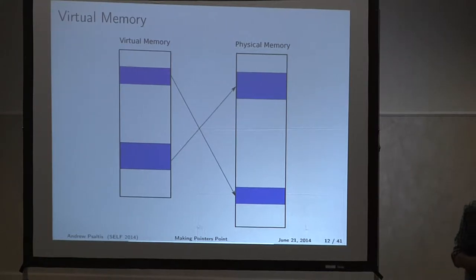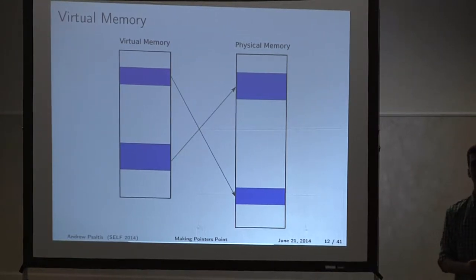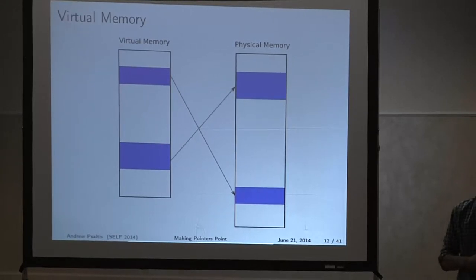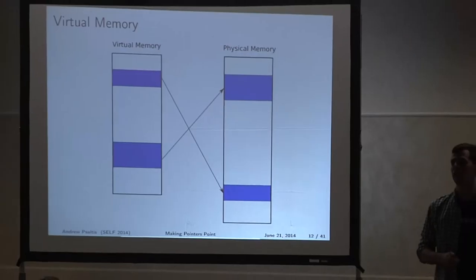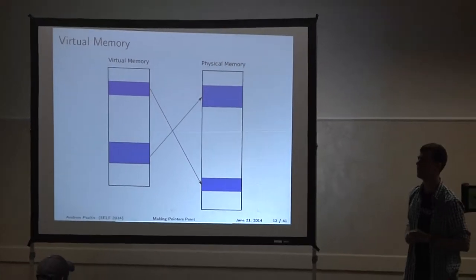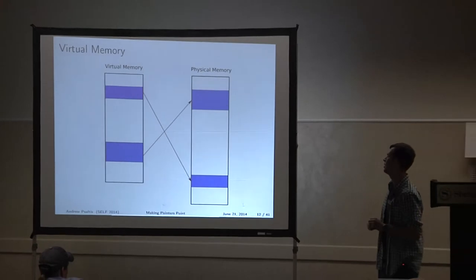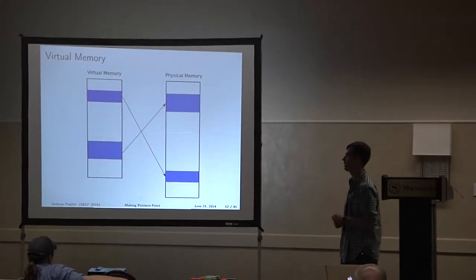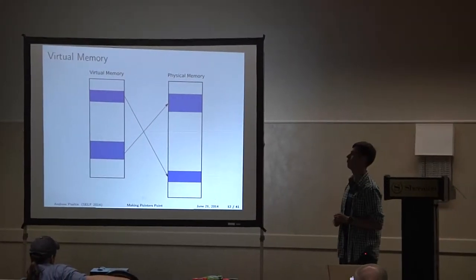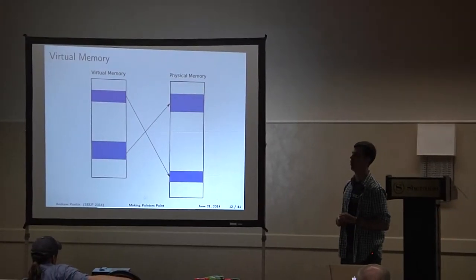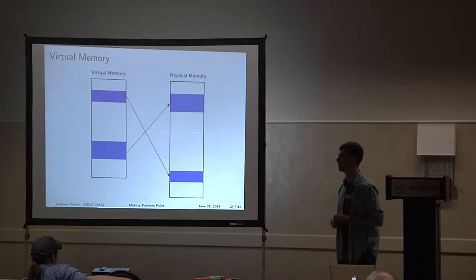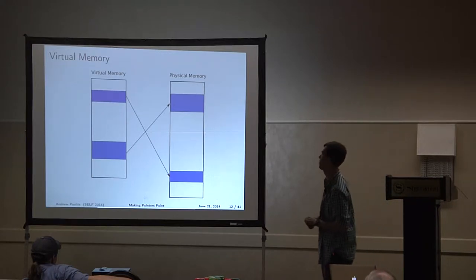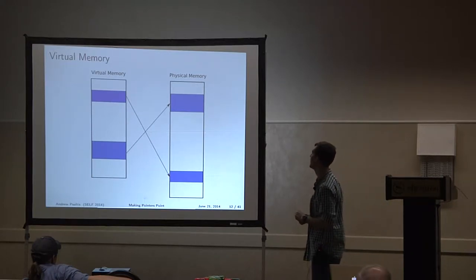What is assumed is that the program has all the memory available in the world to it — it has the full addressable space of memory. In the case of 32-bit systems, this is 4 gigabytes, up to 2 to the 32. On 64-bit systems, it is 2 to the 64, which is actually more memory than you can generally put into a single computer these days.